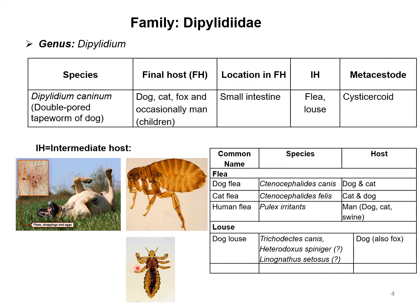The louse is another permanent ectoparasite — they don't leave the host during their entire life cycle. When you study veterinary entomology, you will learn more about these ectoparasites. The flea species that act as intermediate hosts for this parasite include Ctenocephalides canis (dog flea), Ctenocephalides felis (cat flea), and Pulex irritans (human flea), which can also be found in dogs, cats, swine, and other animals.